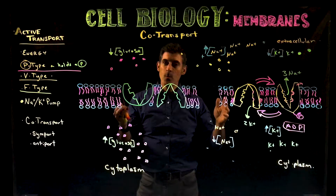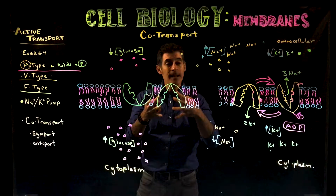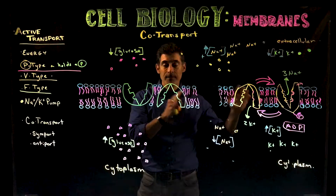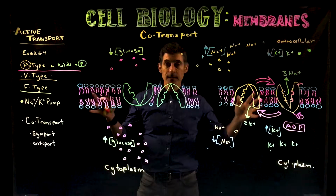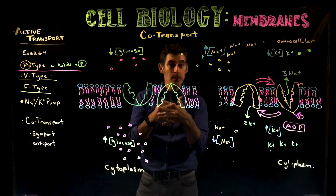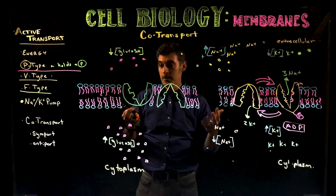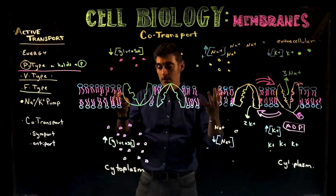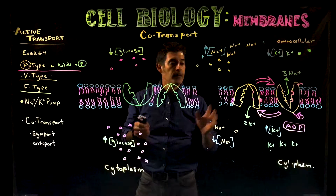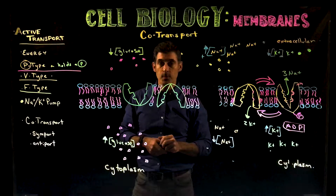And then there are times where there's something that we have to study and it requires that you know one, two, three, five, ten different things in order to put it together. It will only really make sense when you put those things together, and it also makes that topic a lot more interesting because you start to see how all these things actually connect in a living cell. This is one of those topics — the topic of co-transport.